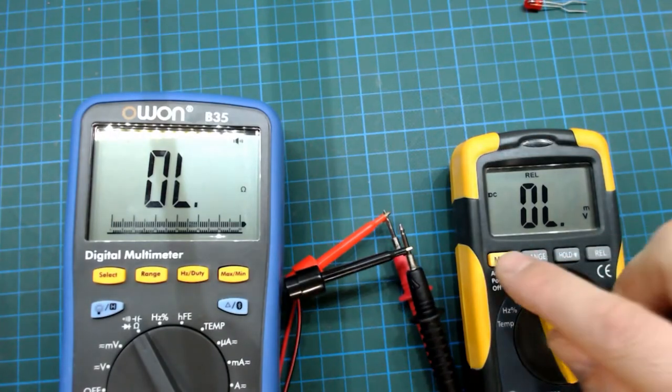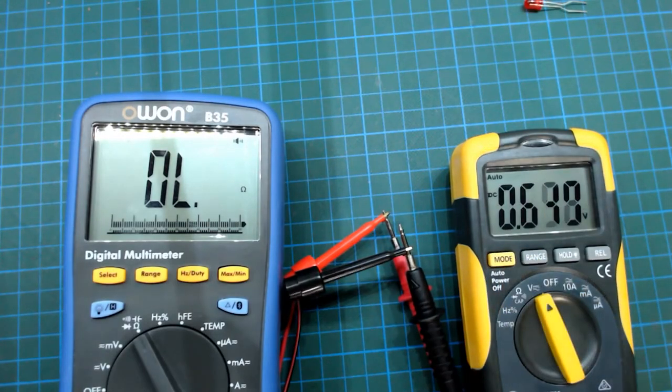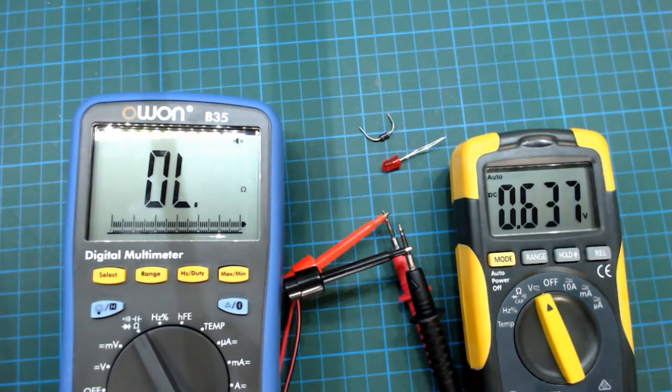You can see that this multimeter is passing 0.6 of a volt for its continuity test. Now that's not enough to trigger either of these diodes but you should know that it's a thing and some diodes can fool it.